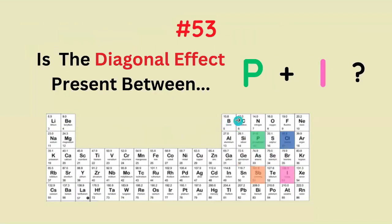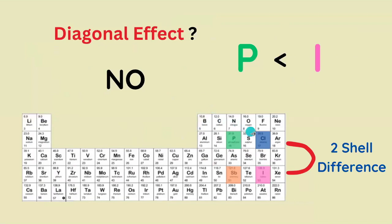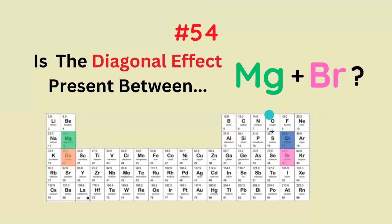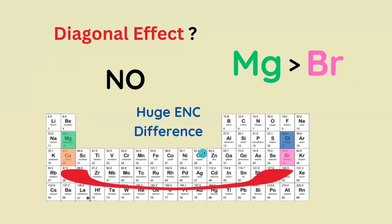Is there a diagonal effect present between these elements? The answer is no, because there's at least a two-shell difference, and with significantly more shielding, they're not going to have significantly similar periodic trend properties. Is there a diagonal effect between Mg and Br? No, because there's a huge effective nuclear charge difference, so they won't be similar in atomic radius or electronegativity.